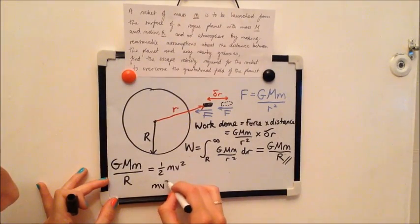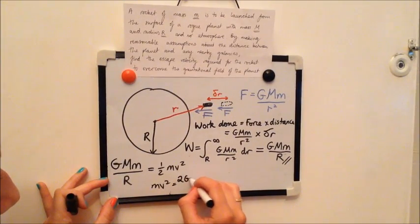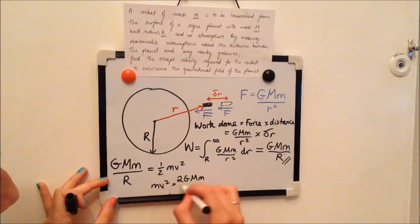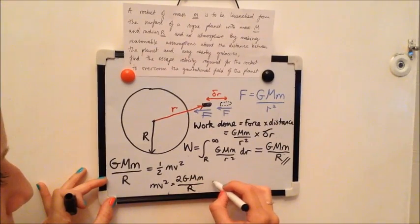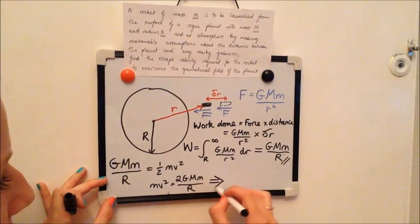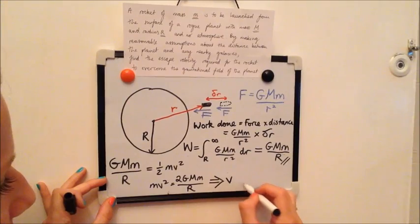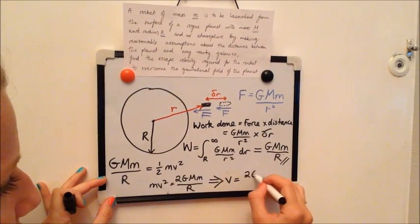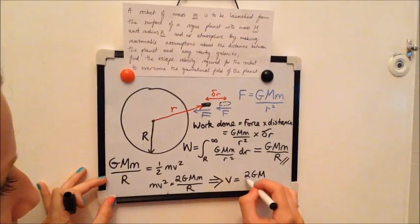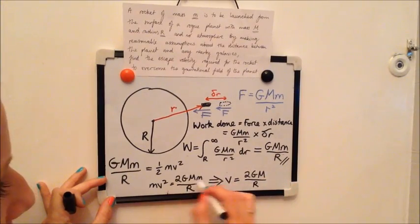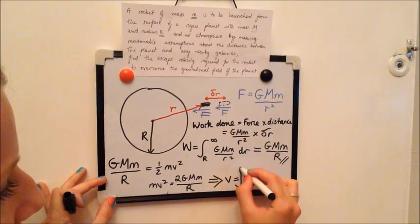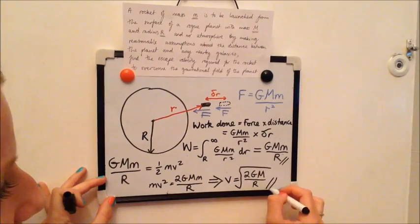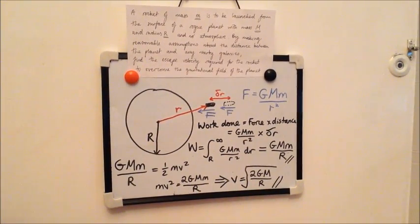So mv squared is 2GMm over big R, and so therefore in the end you get v is equal to 2GM over R as the two m's cancel, and the whole thing square rooted. And then this is the formula for the escape velocity.